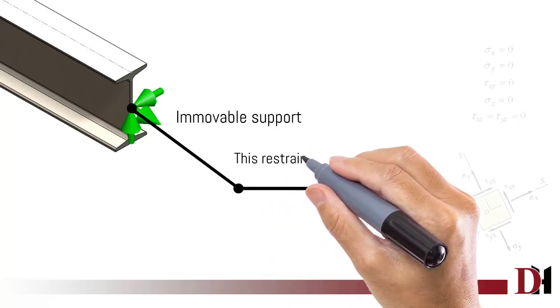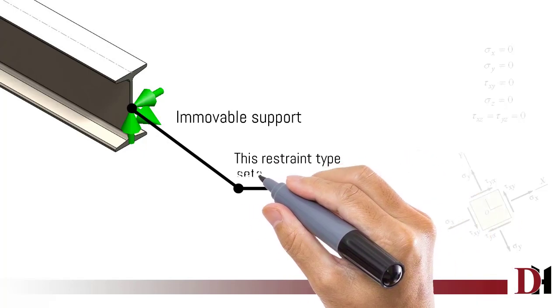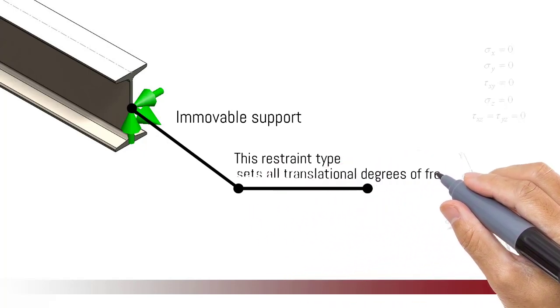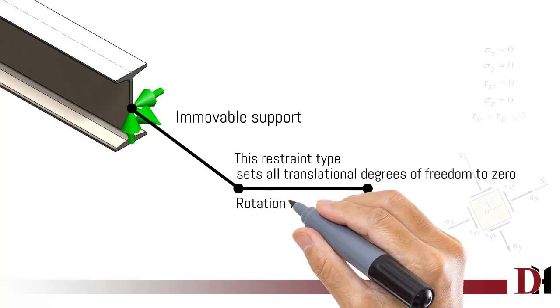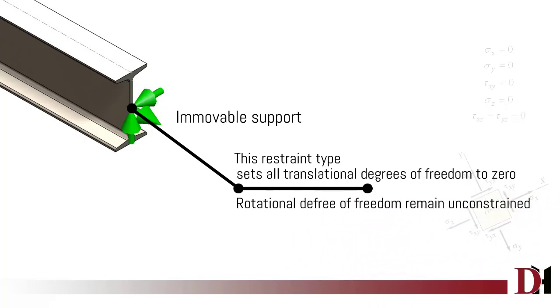Immovable Support has constraints only for Translation Motion. Rotational Motion remains unconstrained.